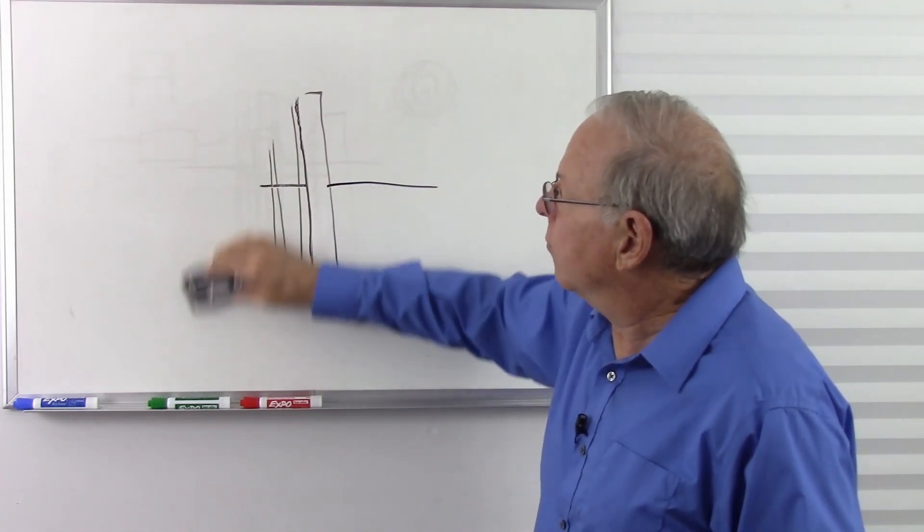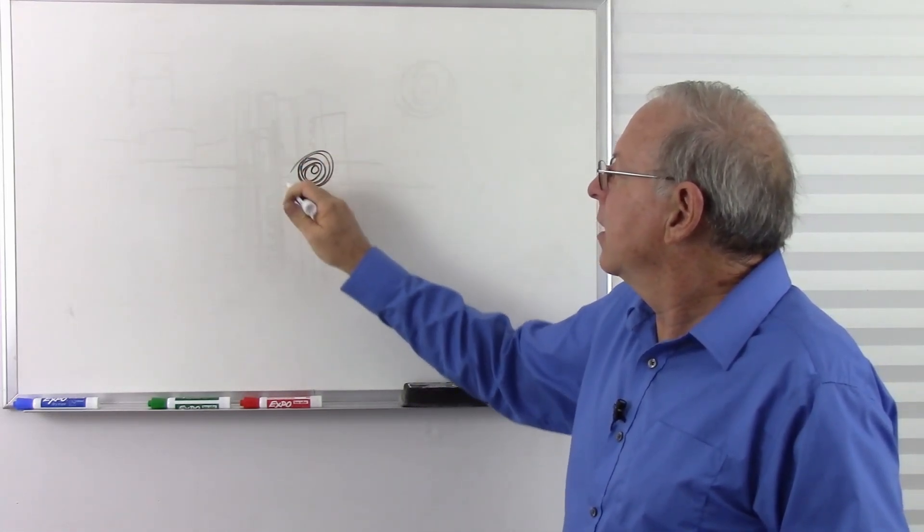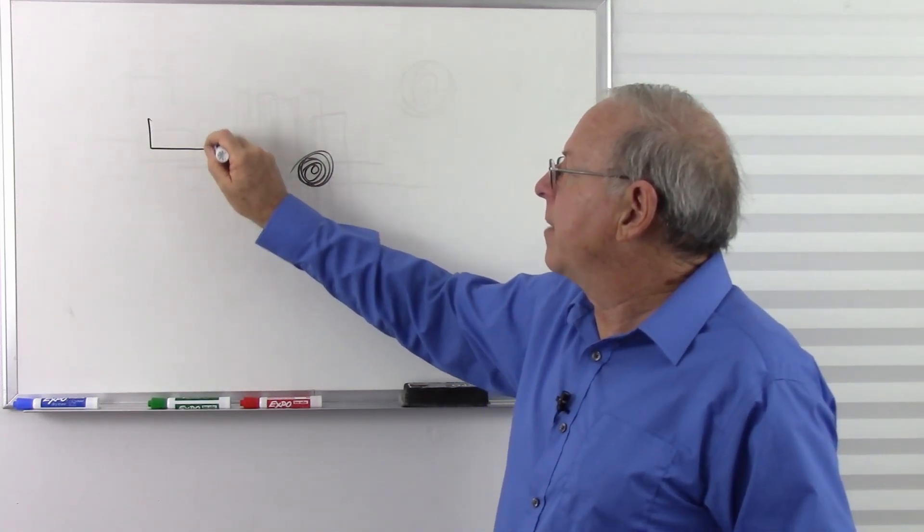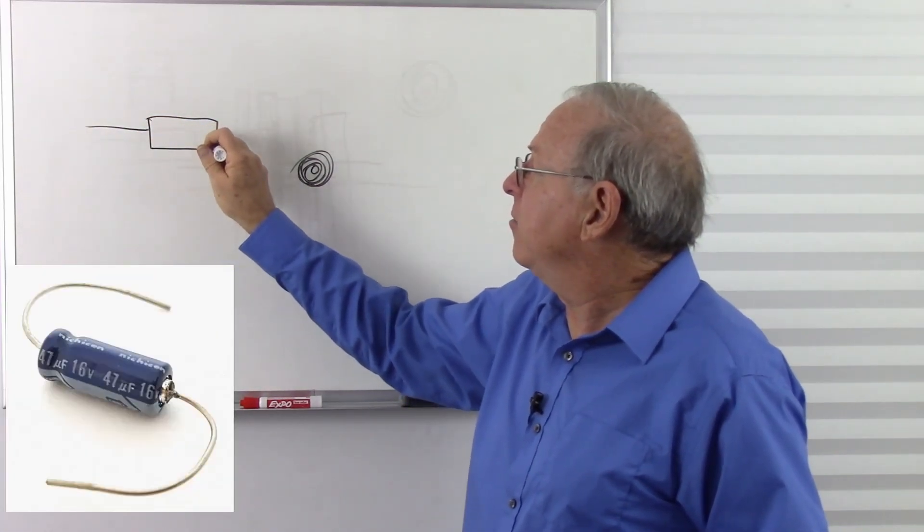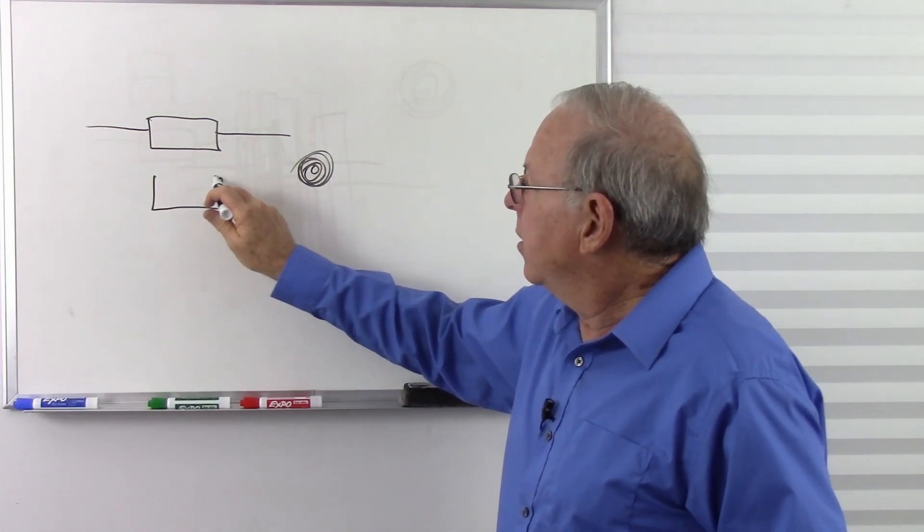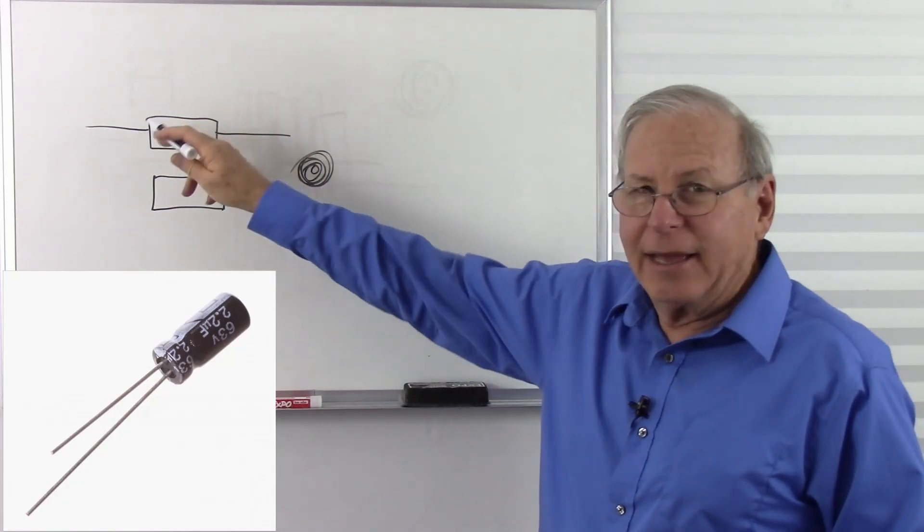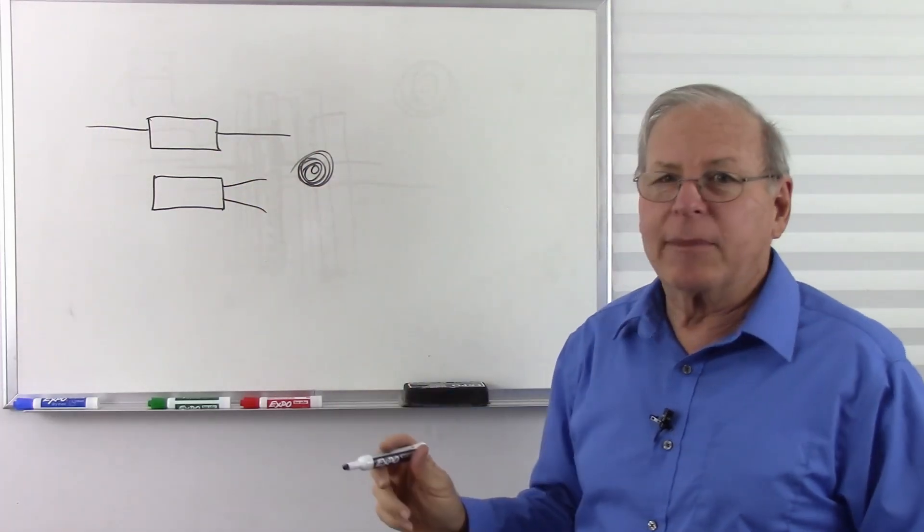Of course, this is then rolled into a cylinder. And you might find electrolytic capacitors that have axial leads, or you might find them with radial leads. So sometimes they come out the ends, sometimes they both come out one end.